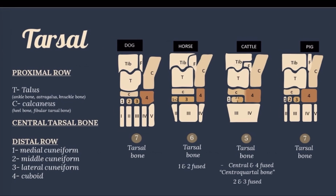In the tarsal bones, the proximal row consists of two large bones. The talus — also called the tibiotarsal bone, ankle bone, astragalus, or knuckle bone — is the larger bone that forms the mobile joint with the tibia. The calcaneus, also called the fibular tarsal bone or heel bone, projects proximal and caudal to form the point of the hock, and acts as the lever for the muscles extending the hock. The tarsal arrangement is almost the same as the carpus, with a proximal and distal row, but with an additional central row between the two.